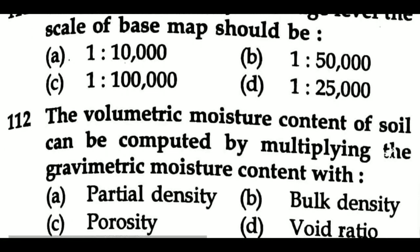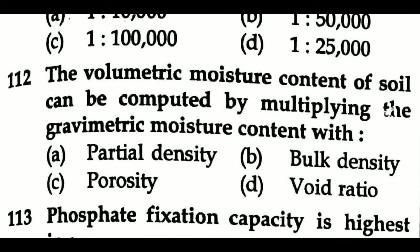Question 111: For detailed soil survey at village level, the scale of base map should be — Option A: 1:10,000, Option B: 1:50,000, Option C: 1:1,000,000, Option D: 1:25,000. Question 112: The volumetric moisture content of soil can be computed by multiplying the gravimetric moisture content with — Option A: particle density, Option B: bulk density, Option C: porosity, Option D: void ratio.